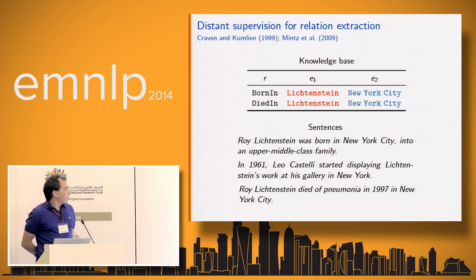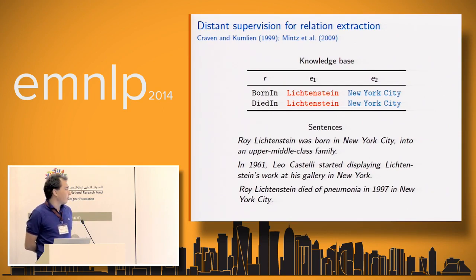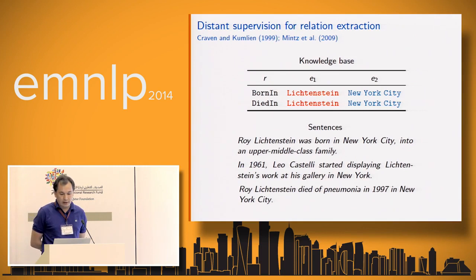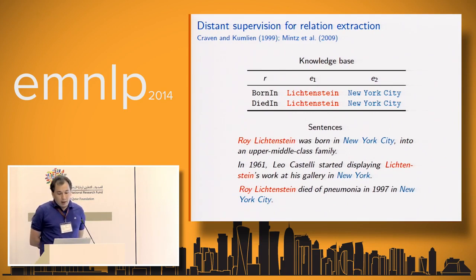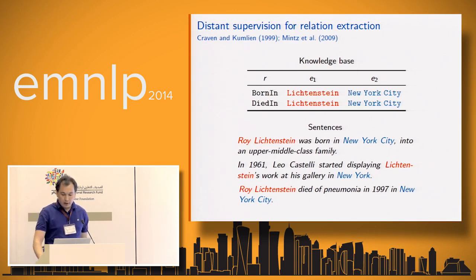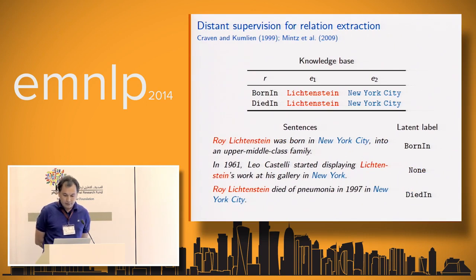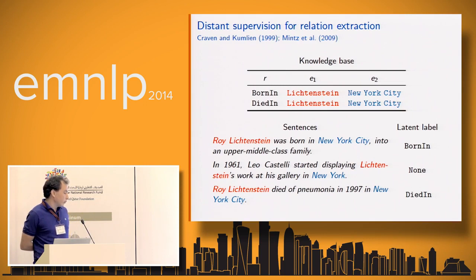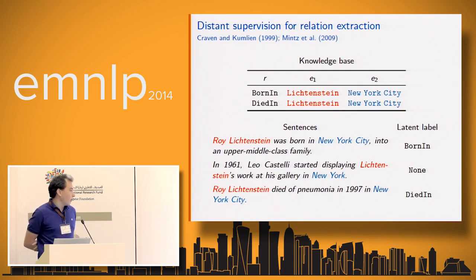Recently, people have introduced a new paradigm called distance supervision. Instead of relying on labeled data, you use a knowledge base such as Freebase and unlabeled text. You extract named entities from your unlabeled data, link them to the knowledge base, and label each sentence accordingly — but this leads to a very noisy training set, because some sentences don't express any relation of interest, or some entity pairs verify several relations such as 'born in' and 'died in'.